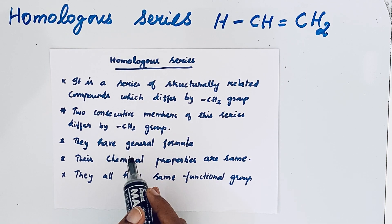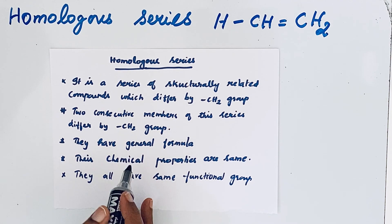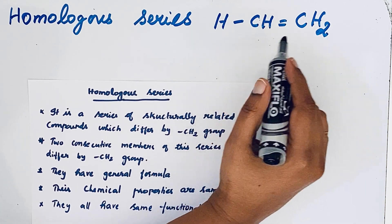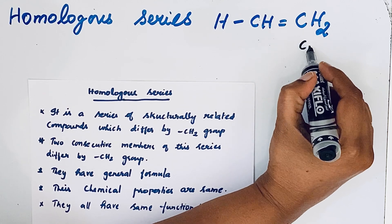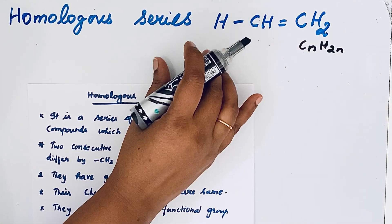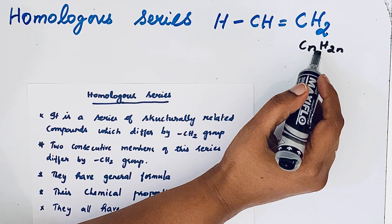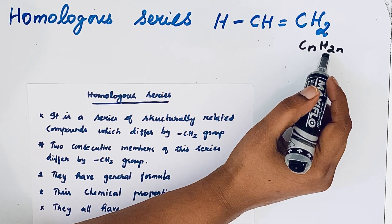They all have the same general formula. Their chemical properties are the same because they have the same functional group. For example, here in H-CH=CH2, it is an alkene, so the general formula is CnH2n. When you are writing consecutive members of this homologous series, you should see that the homologous compound should satisfy this general formula.